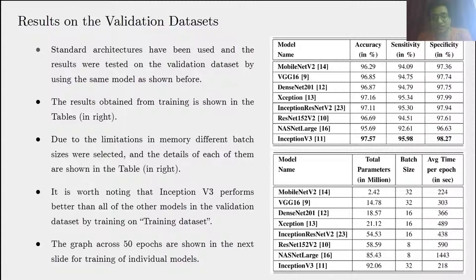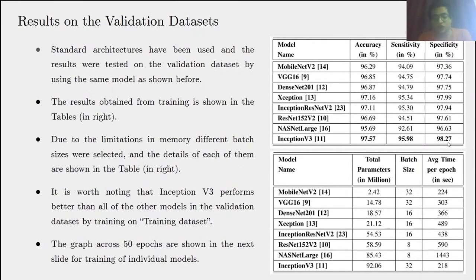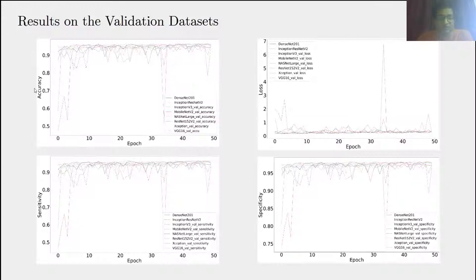Standard architectures were tested on the validation dataset using the same model structure shown previously. Due to memory limitations, different batch sizes were selected, and the details are shown here. Inception V3 performs better than all other models on the validation dataset: it gives an accuracy of 97.57%, a sensitivity of 95.98%, and a specificity of 98.27%. We also plotted graphs across 50 epochs for accuracy, loss, sensitivity, and specificity for all eight models considered.